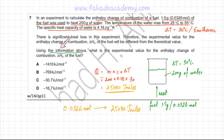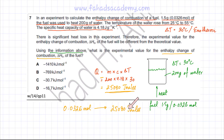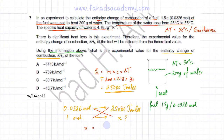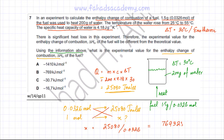The question wants us to find the enthalpy change of combustion, which is defined for 1 mole of fuel. We know 0.0326 moles produces 25,080 joules, so using simple ratios, the energy for 1 mole equals 25,080 divided by 0.0326, which gives approximately 769,325 joules.